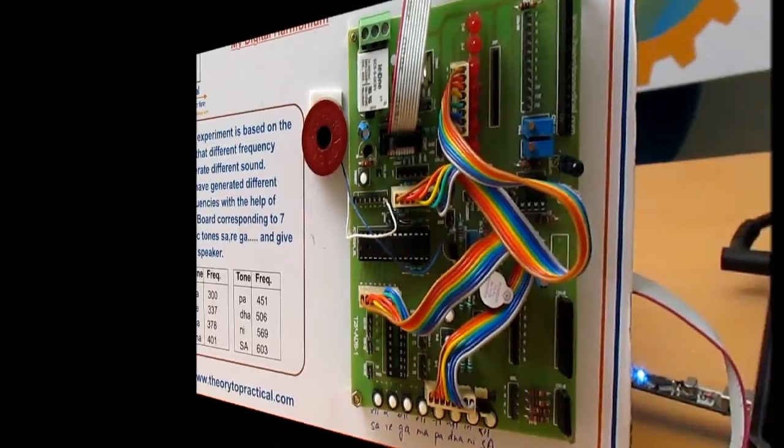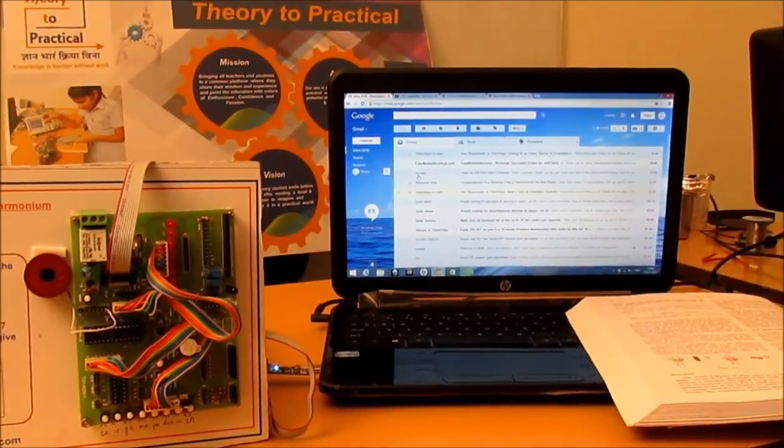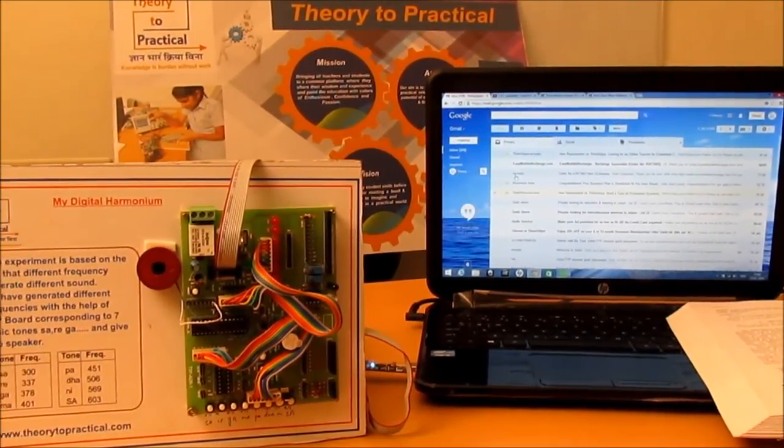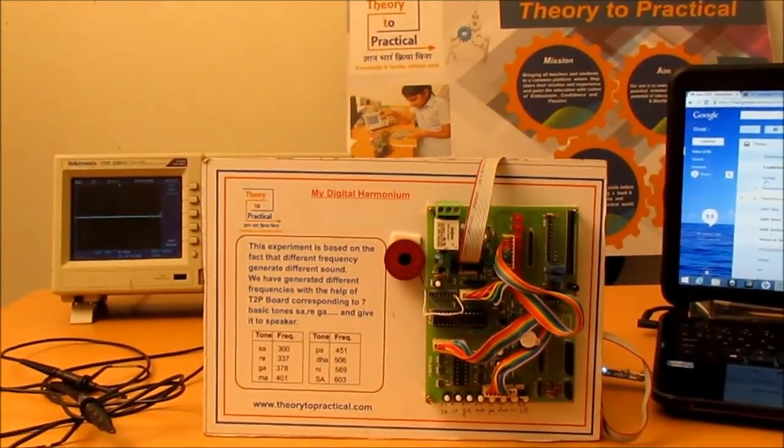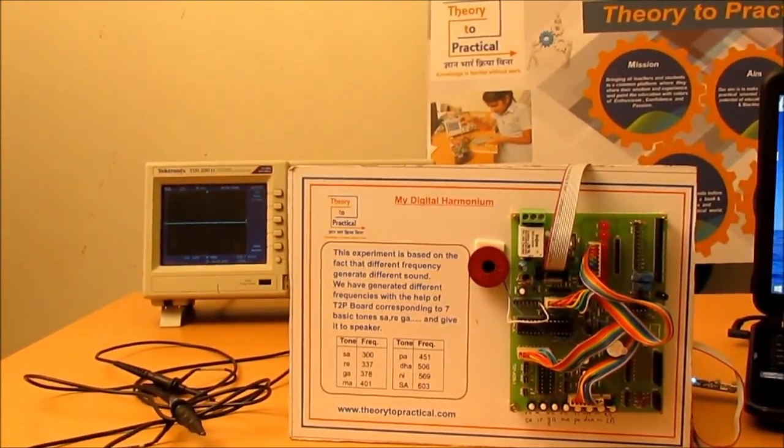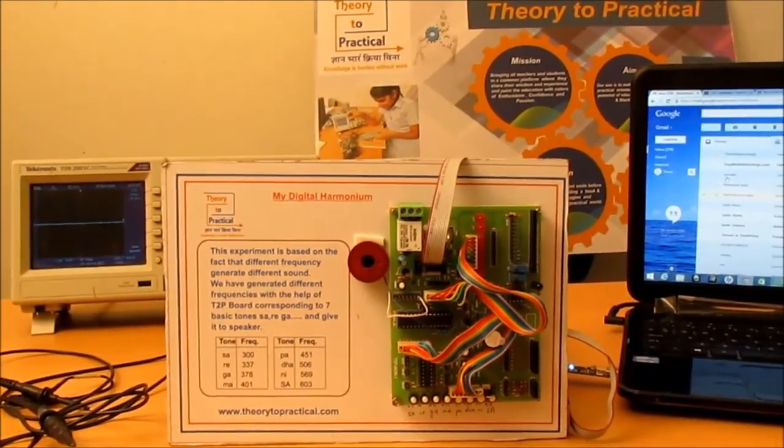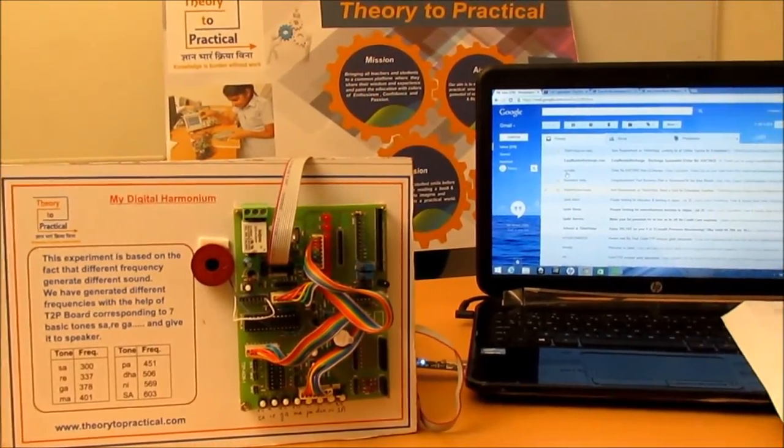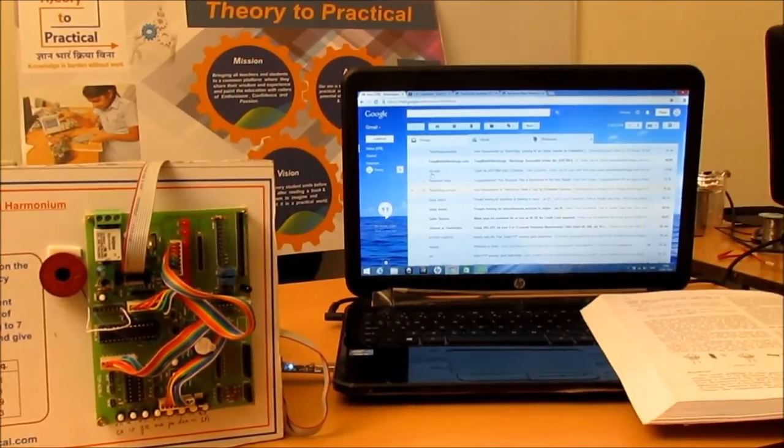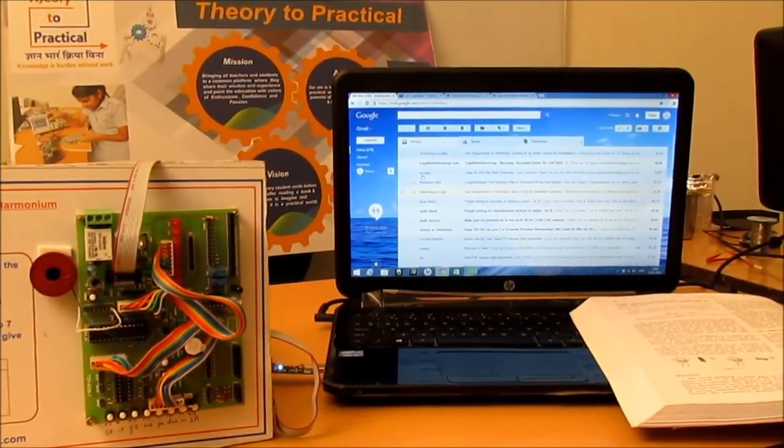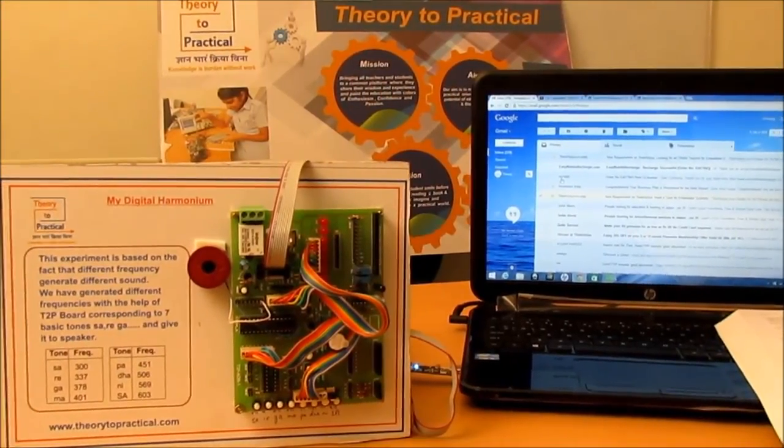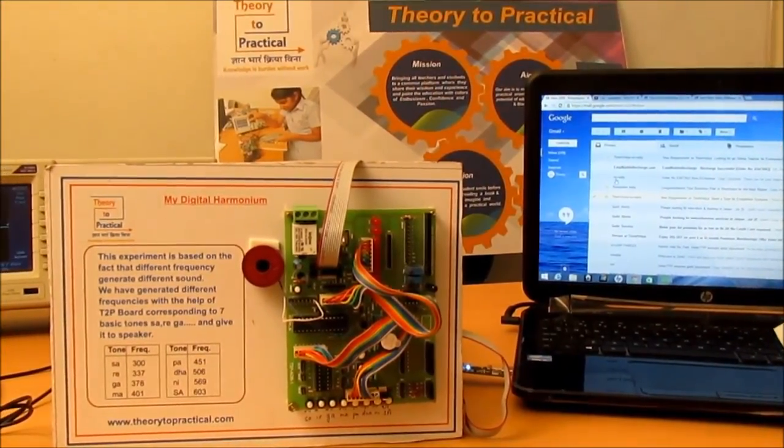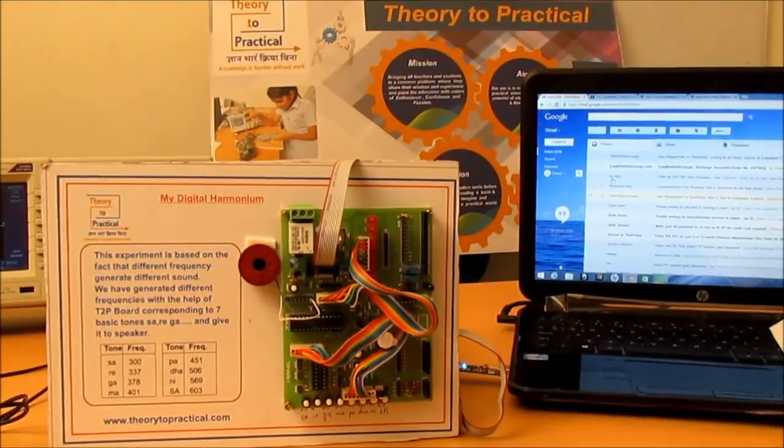Let's discuss the theory part of this project. Let's understand the science behind this experiment. So first, tell me what is sound? Sound is a vibration, and the vibration at different frequencies generate different sounds. Musical instruments like flute, harmonium, and piano are based on this very principle.